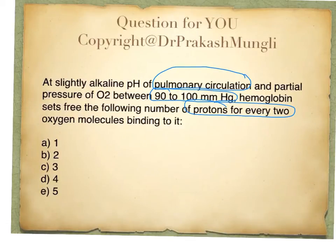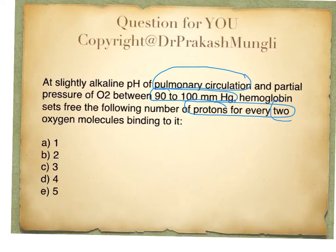Generally at a partial pressure of 90 to 100 mmHg, hemoglobin will be fully saturated — meaning all four subunits in the hemoglobin molecule will be loaded with oxygen. The question specifically asks how many protons are released for every two molecules of oxygen binding to it. To answer this, you really need a thorough understanding of the Bohr effect and the Haldane effect.